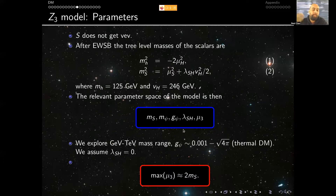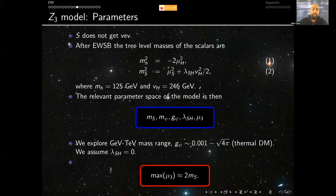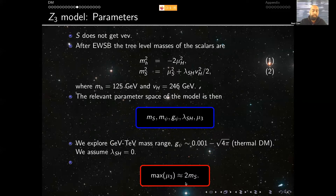We have a new interaction here and wanted to study the consequences coming from this new term. After electroweak symmetry breaking — assuming S doesn't get any VEV — you have the two masses of your particles, the Higgs and the new scalar. The relevant parameters of this model are five, but we are not going to consider the Higgs portal; we'll explore only the Yukawa-like term, this coupling, and the μ₃ coupling. In the WIMP paradigm one normally explores mass ranges from some GeVs up to some TeVs.